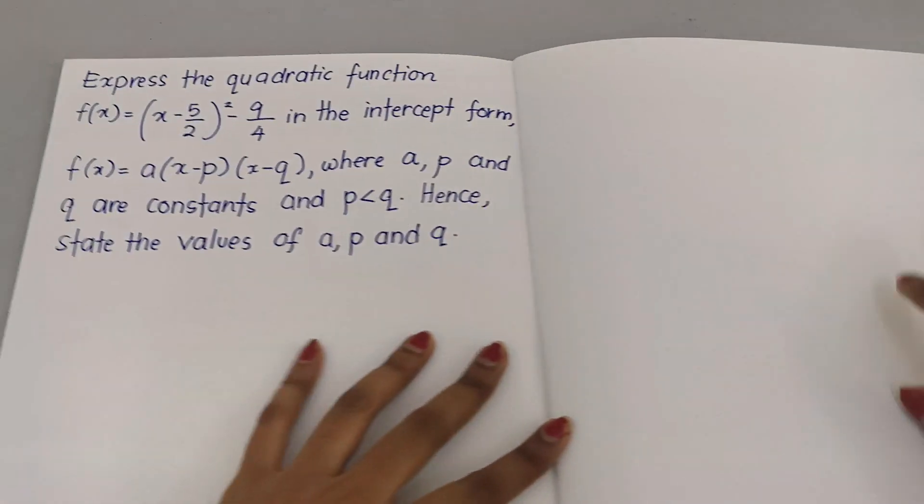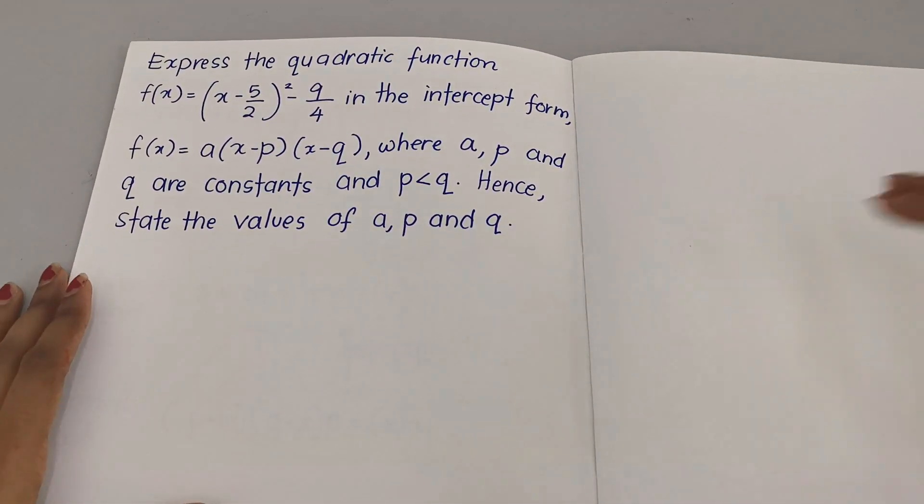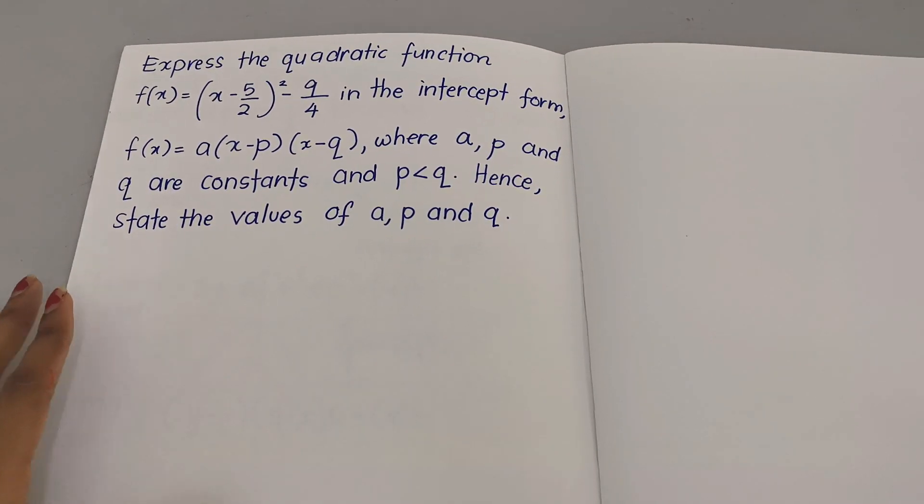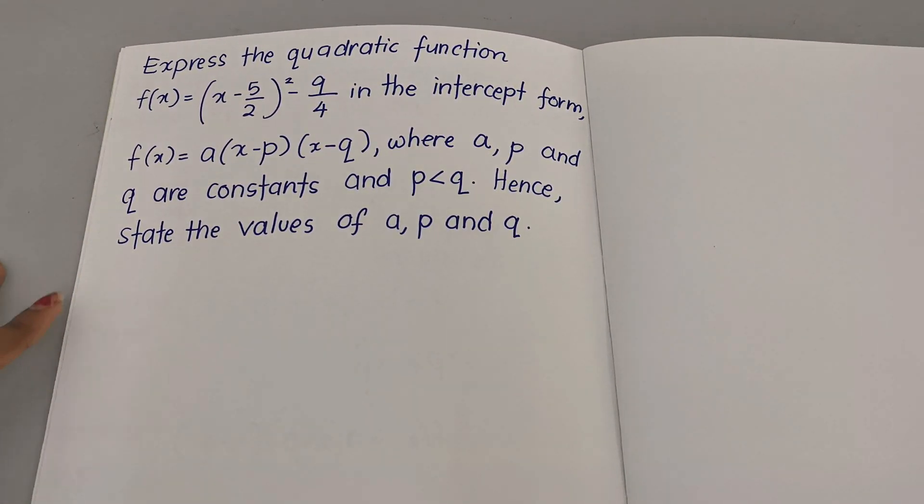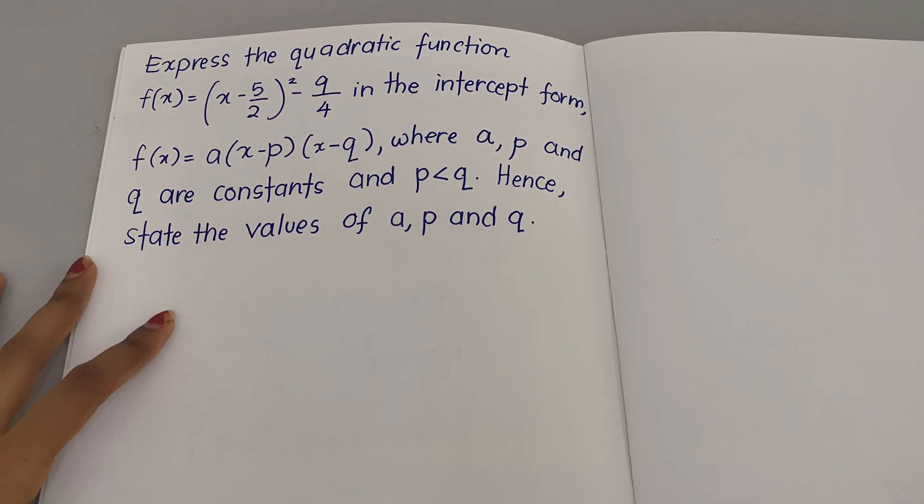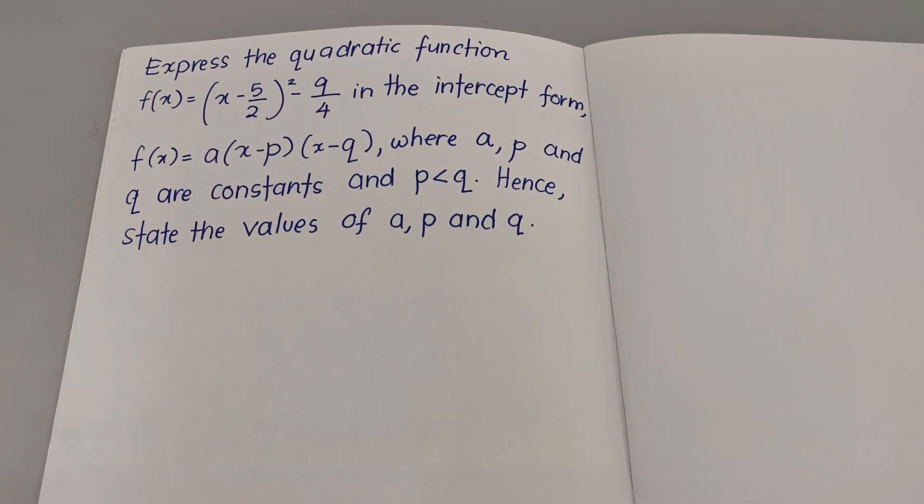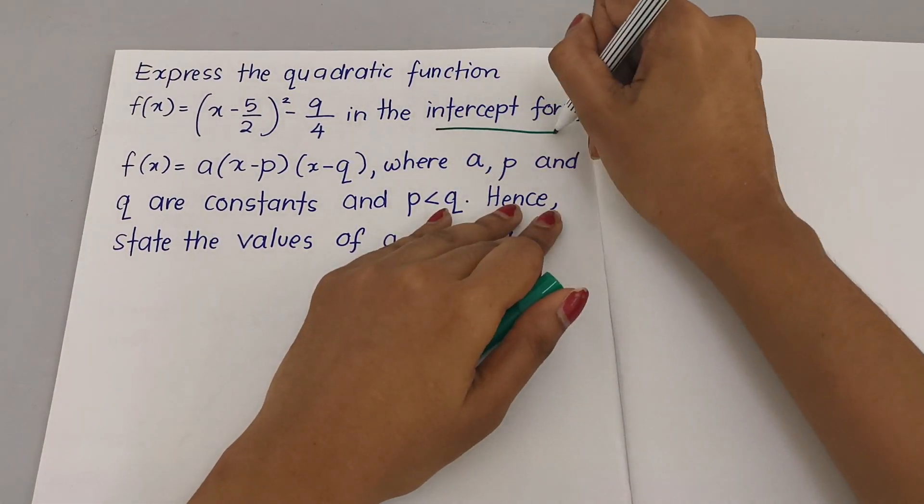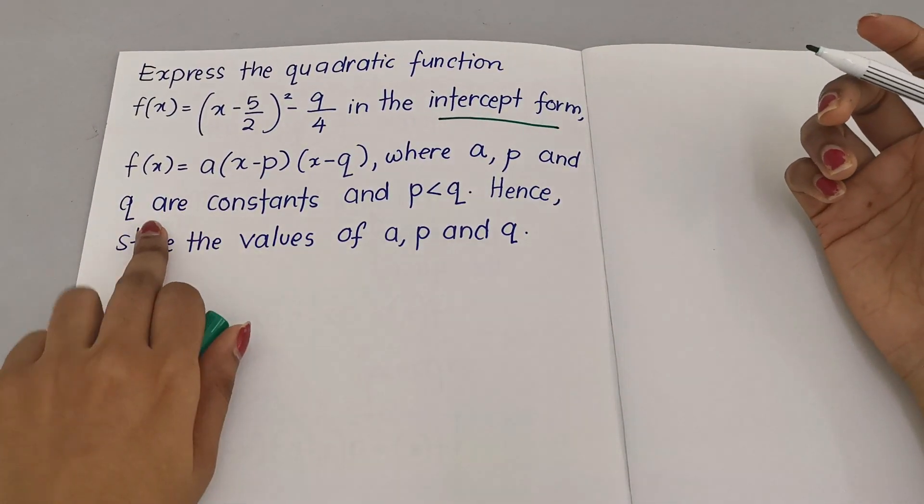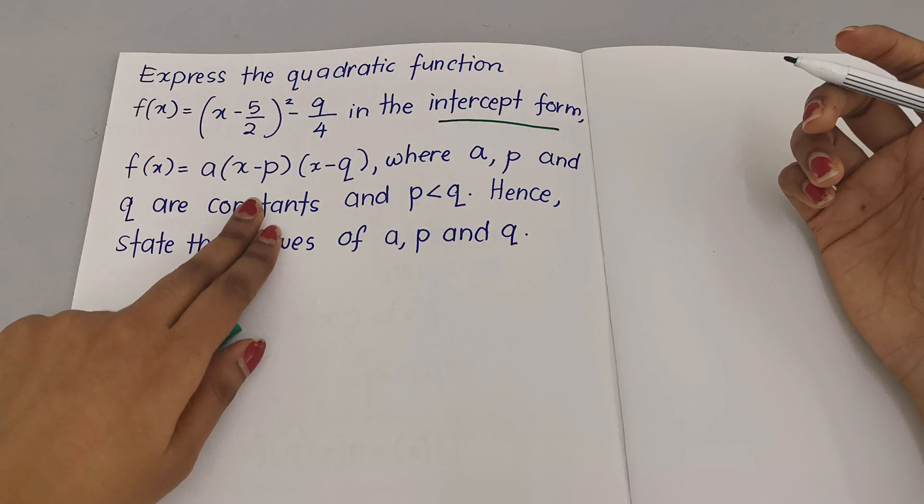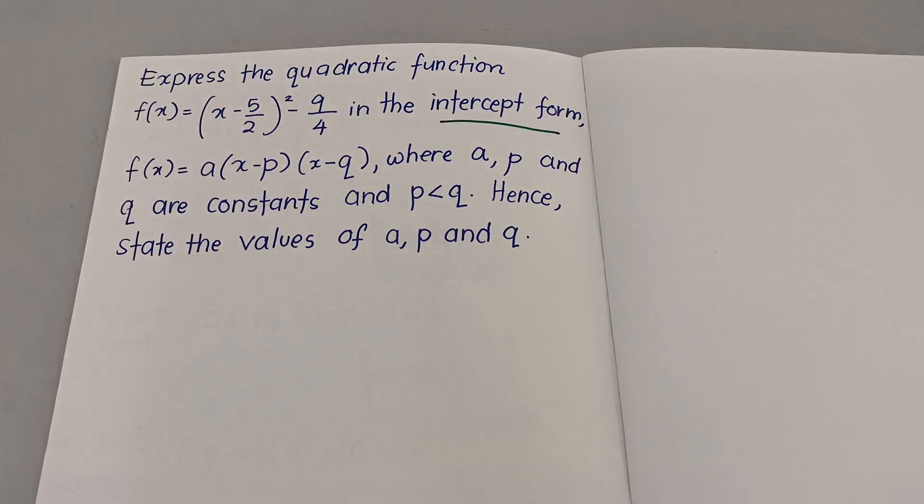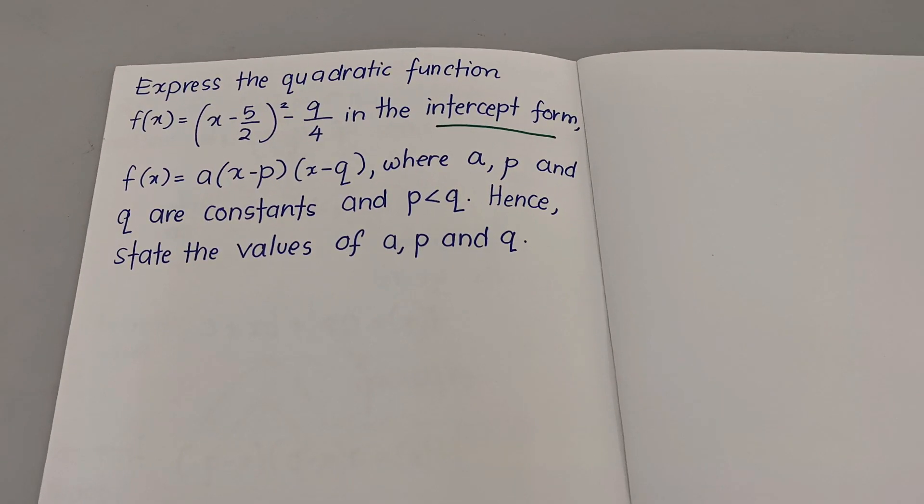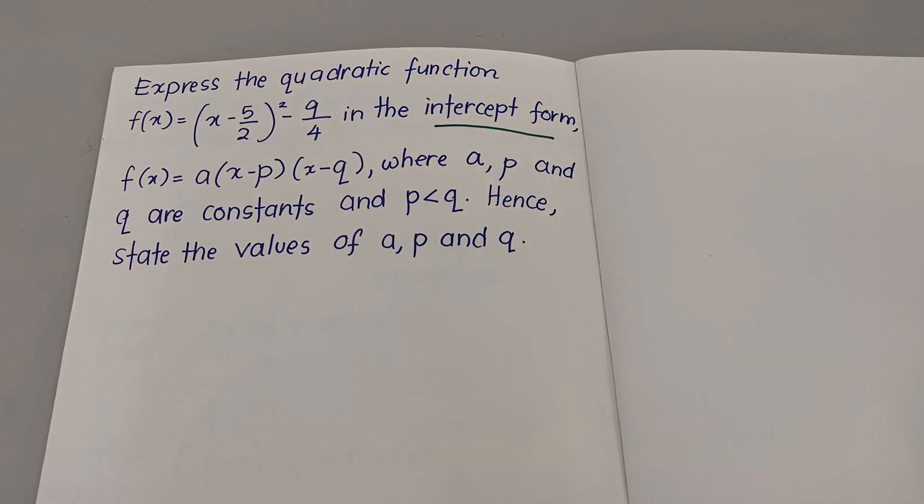Now let's look at the example. Express the quadratic function f(x) = (x - 5/2)² - 9/4 in the intercept form, so we want in this form format: f(x) = a(x - p)(x - q), where a, p, and q are constants and p is less than q.